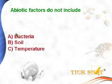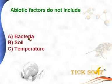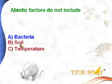Abiotic factors do not include — options: (a) bacteria, (b) soil, (c) temperature. Abiotic means non-living factors. Bacteria is a living thing, so it is a biotic factor — not included in abiotic factors. Soil and temperature are non-living, so they are abiotic factors. Option A, bacteria, is the answer.